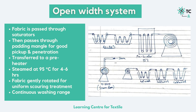Another process is the open-width or pad-roll system, where the fabric passes in full width, preventing any rope markings. The fabric is passed through saturators and impregnated with the scouring liquid. As it exits the saturators, it passes through a padding mangle which ensures good pickup and penetration of the solution. The fabric is then heated in a pre-heater and batched inside a movable chamber, which is moved to a steam line where it is steamed at 95°C for about 4 to 6 hours. The fabric gently rotates for uniform scouring, then goes to a continuous washing range with two hot and two cold washers. This is known as a semi-continuous scouring process.